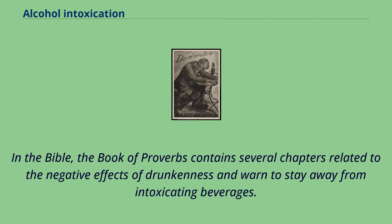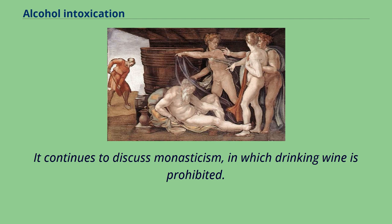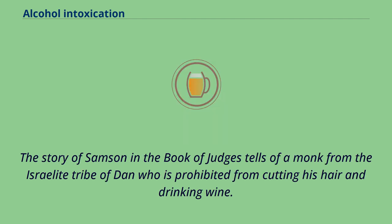In the Bible, the Book of Proverbs contains several chapters related to the negative effects of drunkenness and warned to stay away from intoxicating beverages. The Book of Leviticus tells the story of Nadab and Abihu, the eldest sons of Aaron, who were killed for serving in the temple in Jerusalem after drinking wine, presumably while intoxicated. It continues to discuss monasticism, in which drinking wine is prohibited. The story of Samson in the Book of Judges tells of a monk from the Israelite tribe of Dan who was prohibited from cutting his hair and drinking wine.